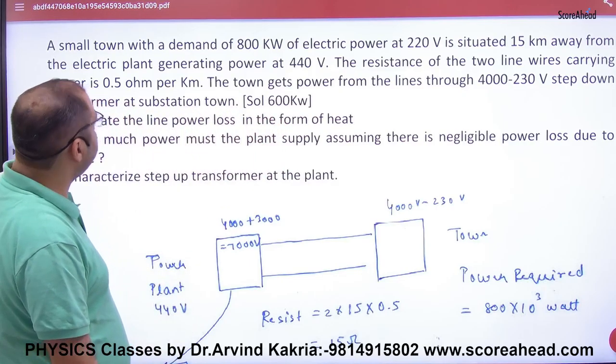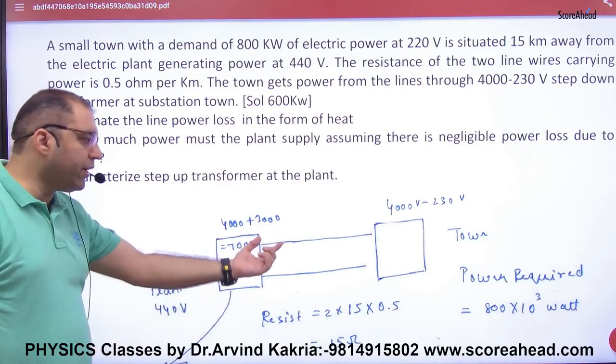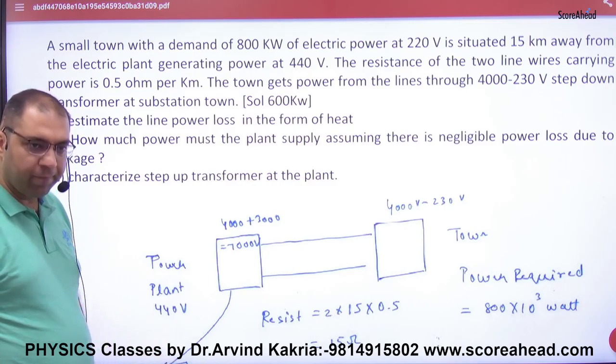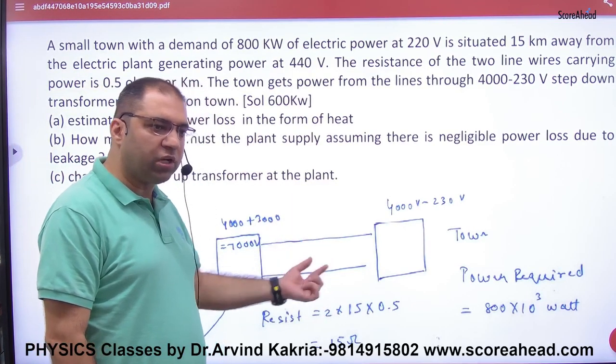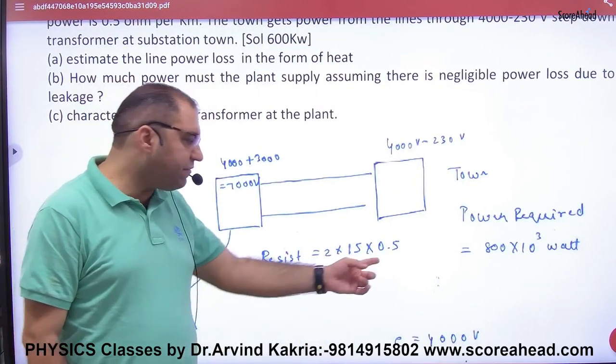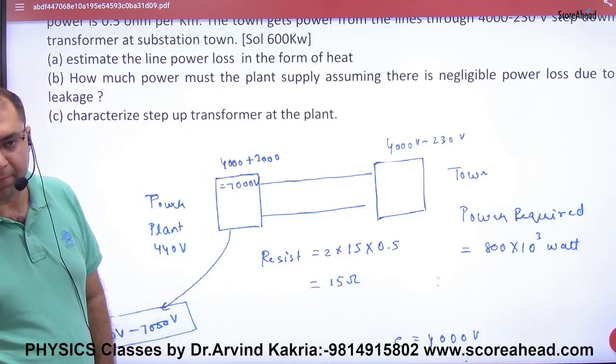Resistance of two line wires carrying power is 0.5 ohm per km. So 1 km resistance is 0.5 ohm, so 15 km wire total length is 30 km. 0.5 we multiply, total resistance is 15 ohm.